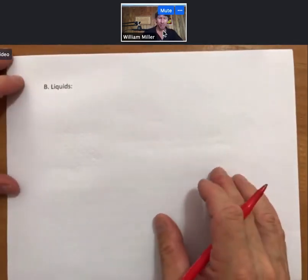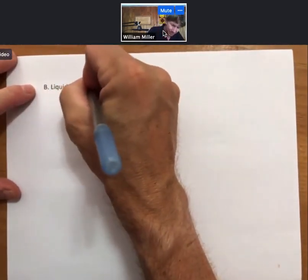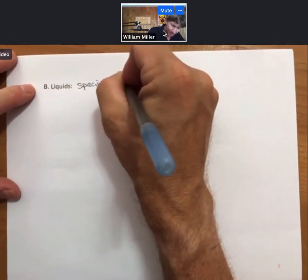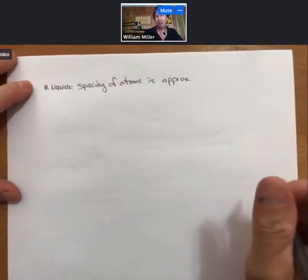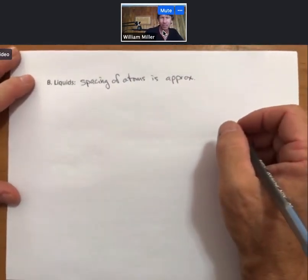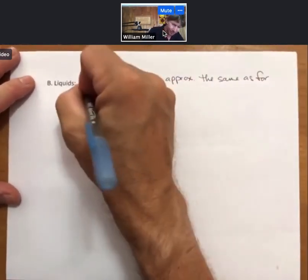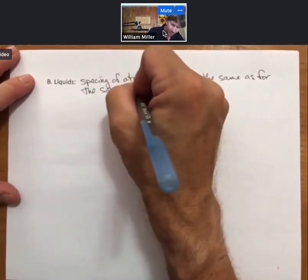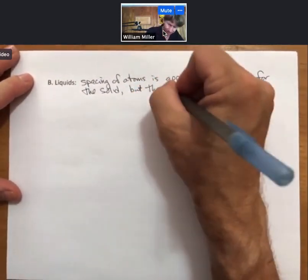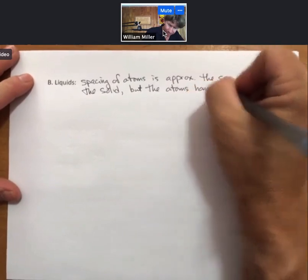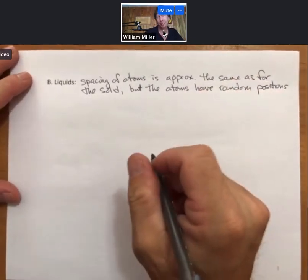Now let's talk about liquids. In liquids, the spacing of the atoms is approximately the same. I'm using approx. as the abbreviation for approximately. Spacing of atoms is approximately the same as for the solid, but the atoms have random positions and movements.